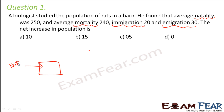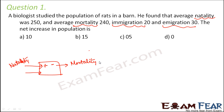Natality is the birth rate — it causes an increase in the population. Mortality is the death rate — it causes a decrease in the population. Immigration means people migrating from other places into this population, so it also adds to the population.